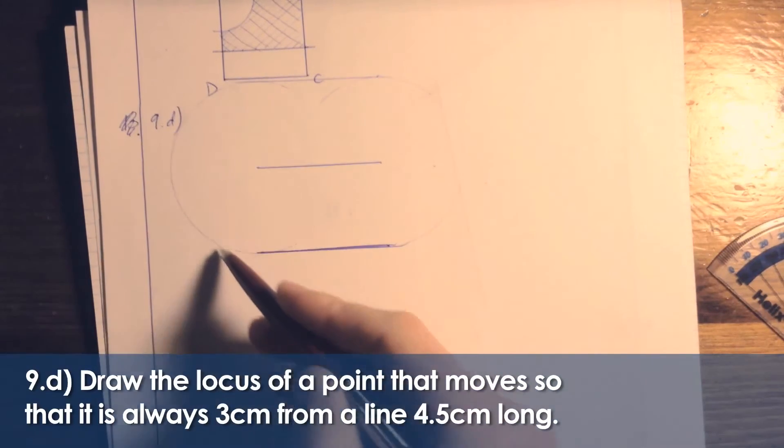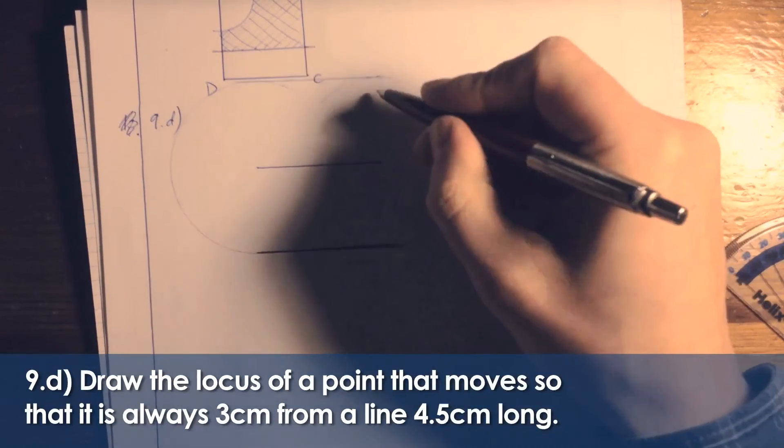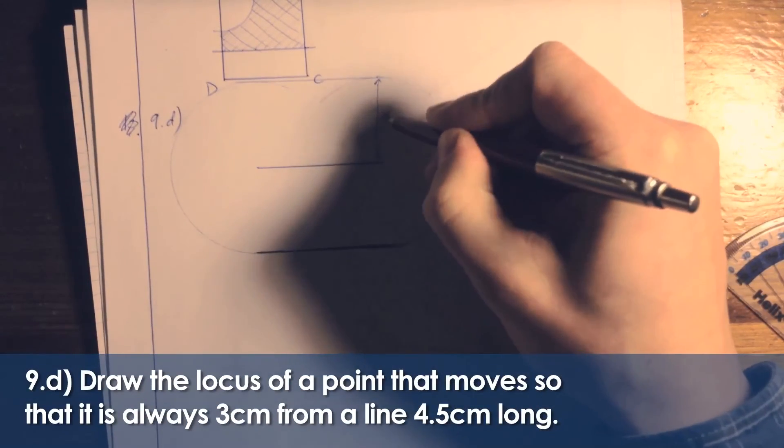I have now drawn that locus of points. They're all 3 cm from this original distance. I'm going to mark in my 3 cm distance there.